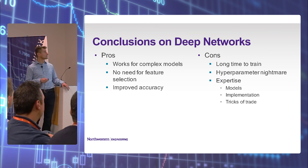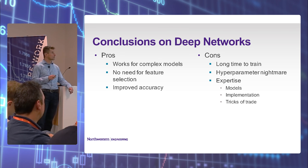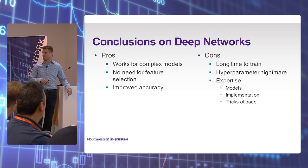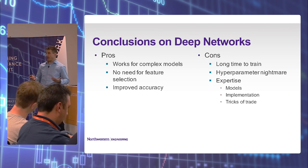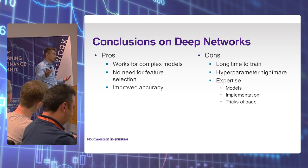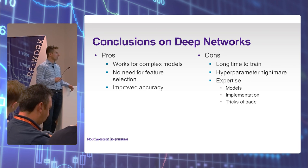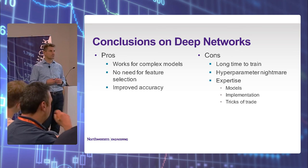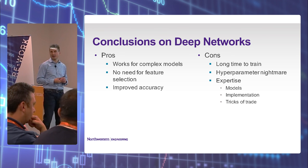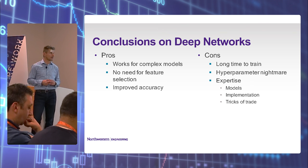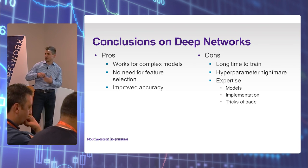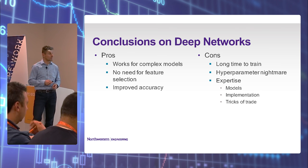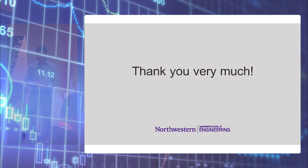The pros of deep learning: it works for complex models — and trading problems are very complex. There's no need for feature selection, and accuracy is improved. The cons: it takes a long time to train — five to six hours in our case. Hyperparameter tuning is a nightmare, taking weeks. You also need expertise — there are no SaaS-type turnkey solutions for deep learning. Thank you very much for your attention.